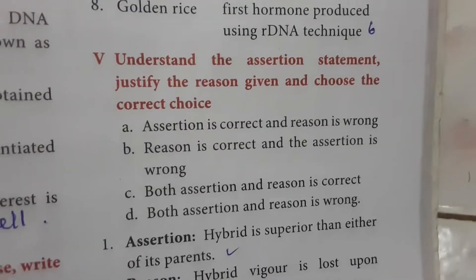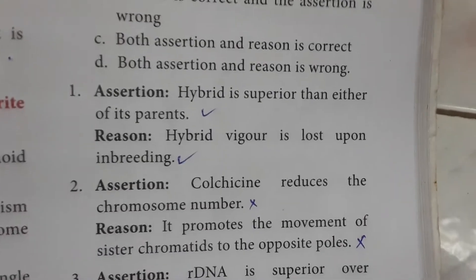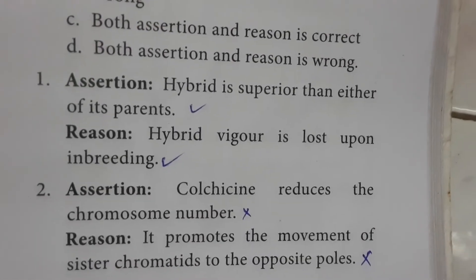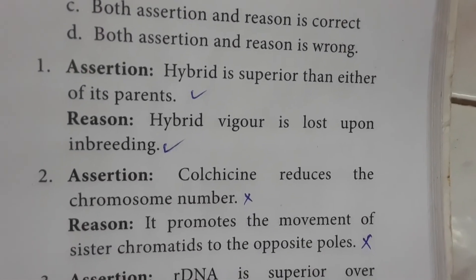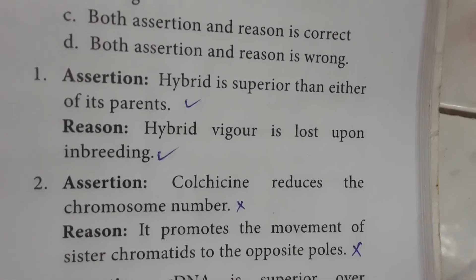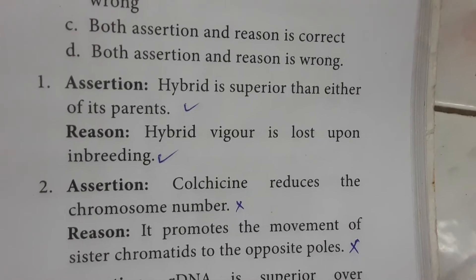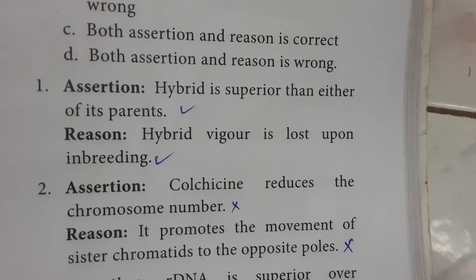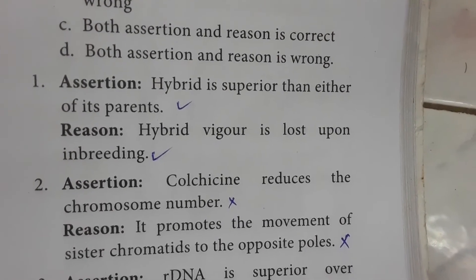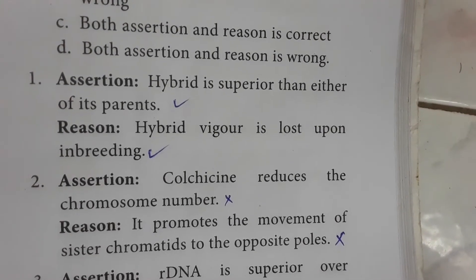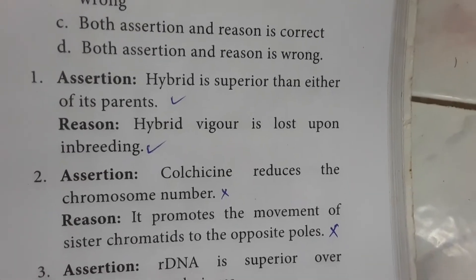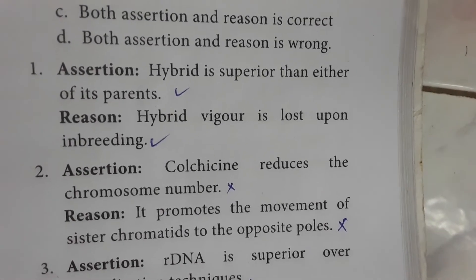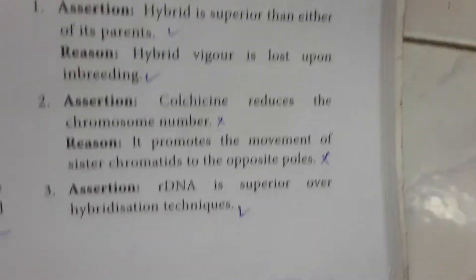Assertion and Reason: Assertion — a hybrid is superior to either of its parents. This assertion is correct. Reason — hybrid vigor is lost upon inbreeding. This reason is also correct. Both assertion and reason are correct statements.